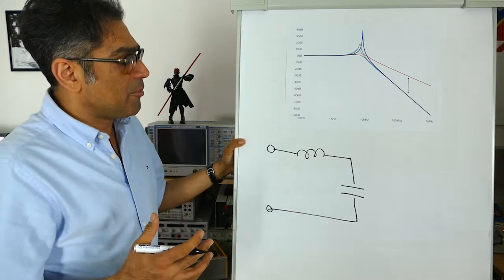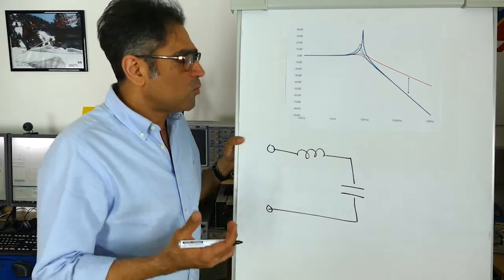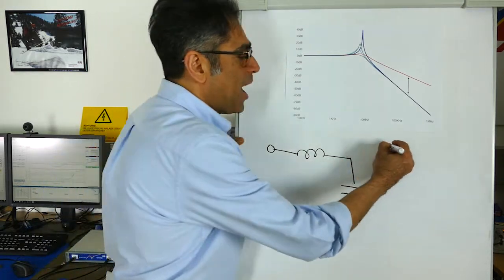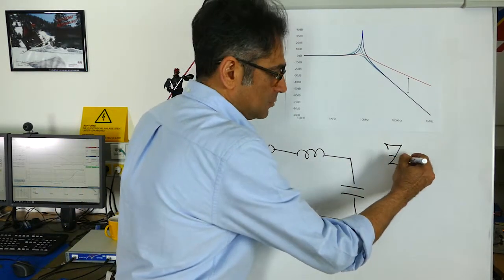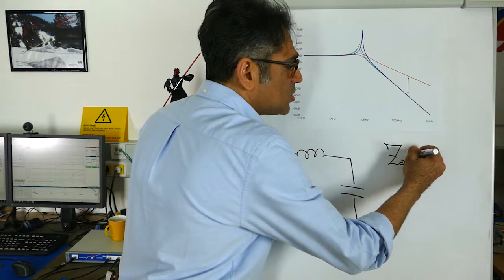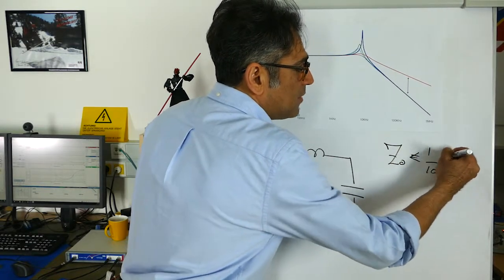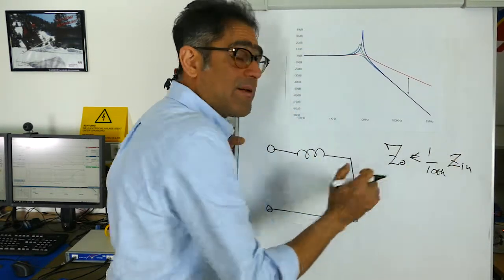If you also remember we talked about Middlebrook stability criteria and we know that the Z out of the filter has to be smaller than one tenth of Z in of the power supply.